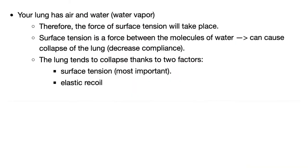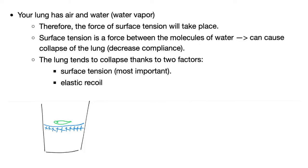Your lungs have water and air, same thing as this glass of water — here we have water, here we have air. Surface tension is a force between the molecules of water. They attract each other, forming a tension on the surface. That's why when you put a pin made of metal on the top, it doesn't sink, as long as you do it carefully and slowly. So surface tension wants your lung to collapse, and this will decrease compliance.